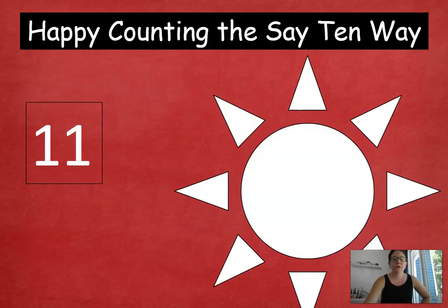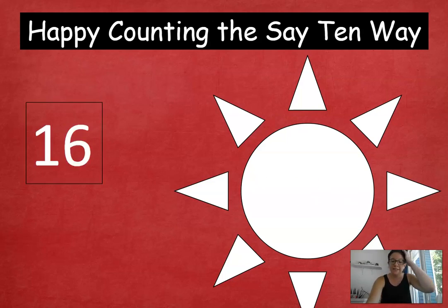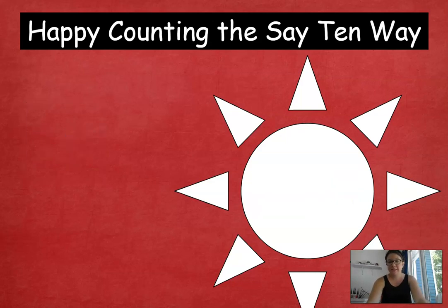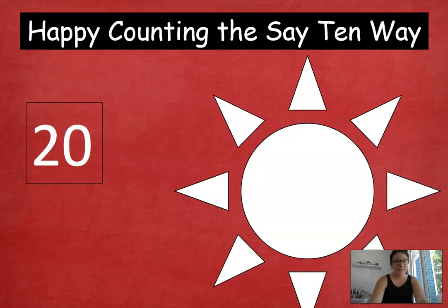Now we're going to practice counting using the say 10 way. That's when we say how many tens are first, and then we add on our extra ones. For example, if you see the number 11, you're going to say 10, 1, because there's 10 and 1. So 11 would be 10, 1. 12: 10, 2. 13: 10, 3. 14: 10, 4. 15: 10, 5. Noticing a pattern. 16: 10, 6. 17: 10, 7. 18: 10, 8. 19: 10, 9. 20: How many tens? 2 tens. Excellent.